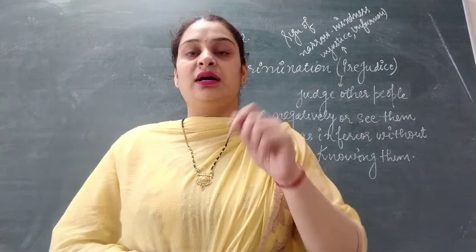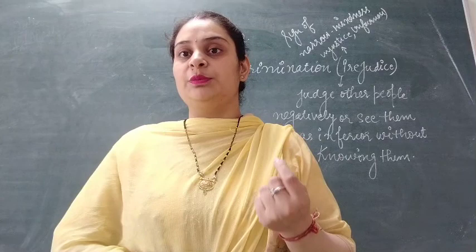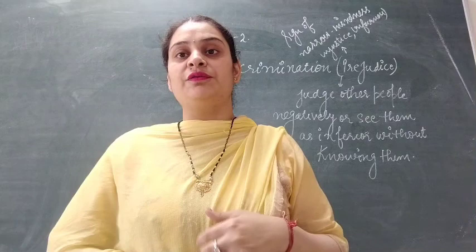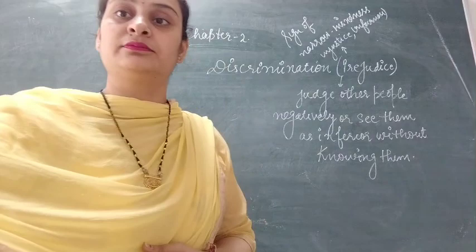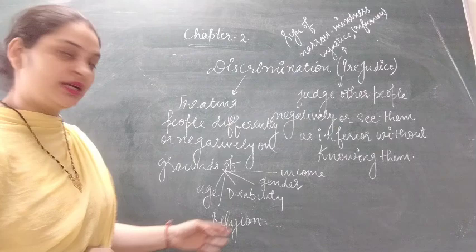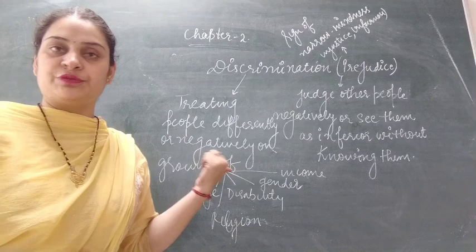Prejudice and discrimination are related but different. Prejudice refers to the negative thinking one holds about a person who belongs to another religion or comes from a small town — it is a sign of narrow-mindedness, unfairness, and injustice. Discrimination, on the other hand, means treating people differently or negatively on the grounds of age, religion, disability, gender, or caste.